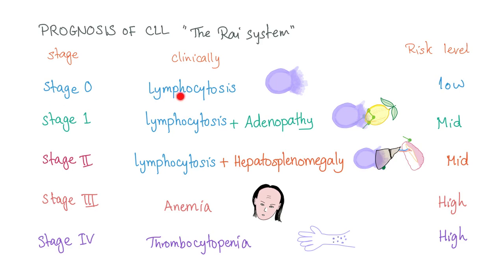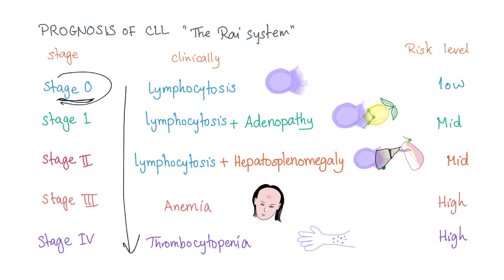Stage zero is the first step, starting with lymphocytosis. The last stage is stage four — thrombocytopenia. Don't ever forget that it starts with stage zero, because some students know the clinical progression but forget the first stage is stage zero. So they answer thrombocytopenia as stage five and anemia as stage four — don't do that.